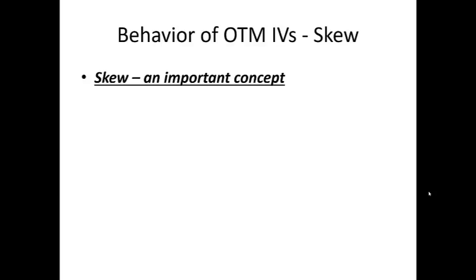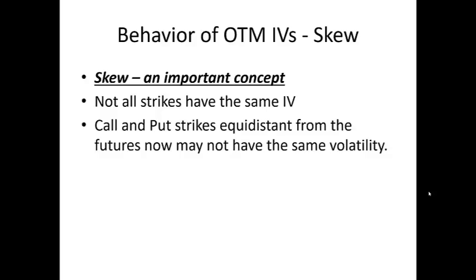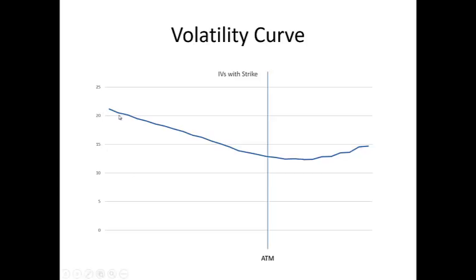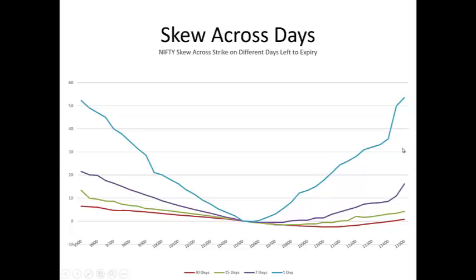Let's talk about skew — a very important concept in volatility. Three key points: one, not all strikes have the same IV. Two, call and put strikes equidistant from ATM may not have the same volatility — OTM put IV is higher than ATM IV, which is higher than OTM call IV. Here's a volatility curve at the beginning of the month: volatility is high on the put side (left), comes down towards ATM, goes slightly lower, then slowly rises. The lowest IVs are usually one or two strikes above ATM for a 30-day expiry. Put IVs are higher than call IVs at the same distance from ATM.